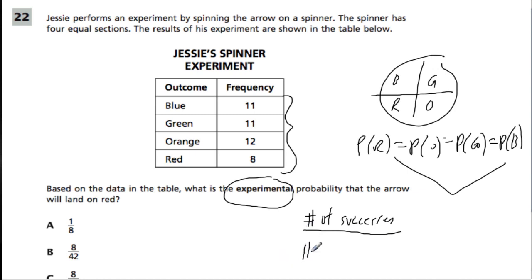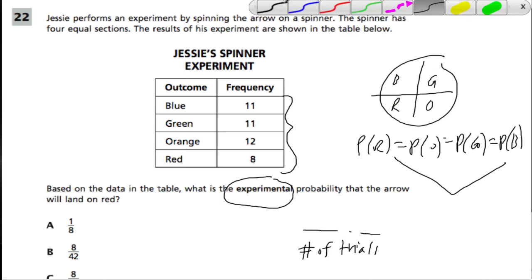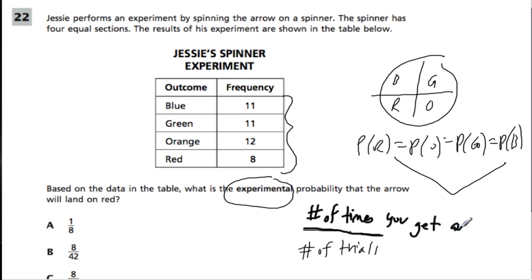And then the number of trials. So I think a way to interpret this, you could say that experimental probability is the number of times you get an outcome, like the number of times you get an orange or red or green or blue, out of the total number of trials.